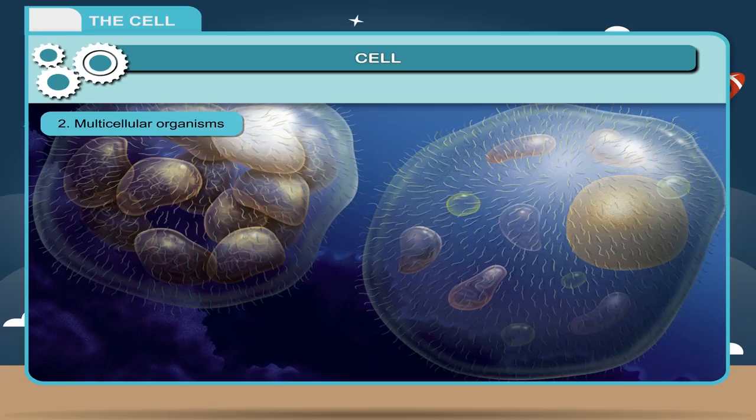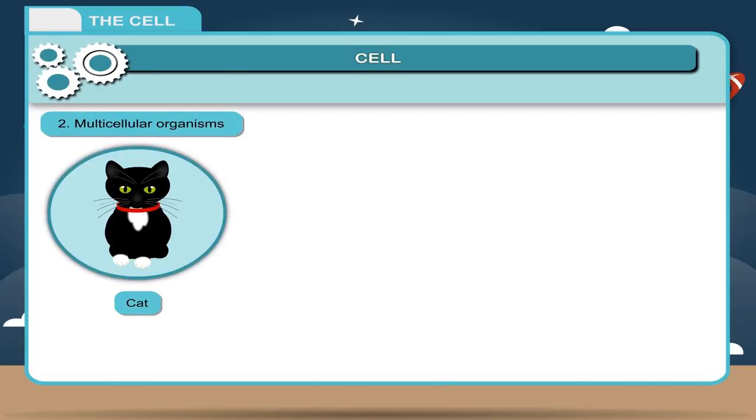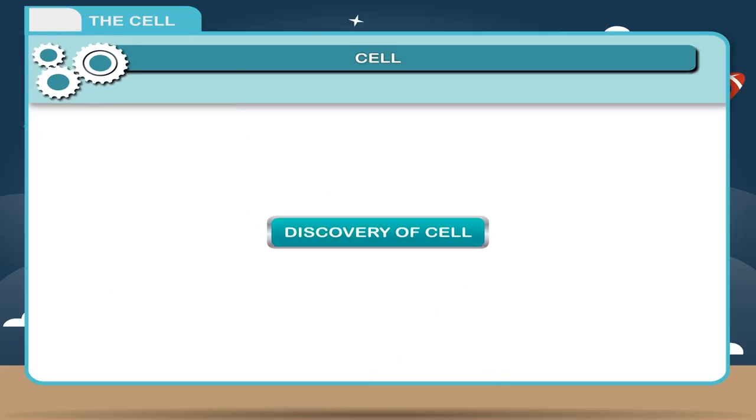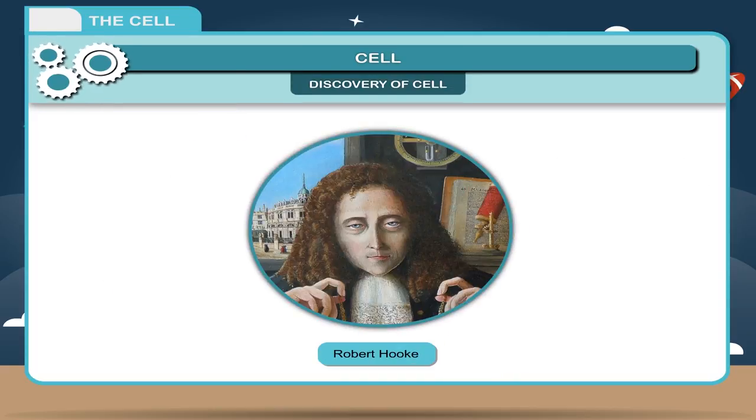Two, multicellular organisms. There are numerous cells which are present in the living body, and different cells perform the life activities in a coordinated manner. Such organisms are called multicellular organisms. Examples: cat, man, trees, etc.